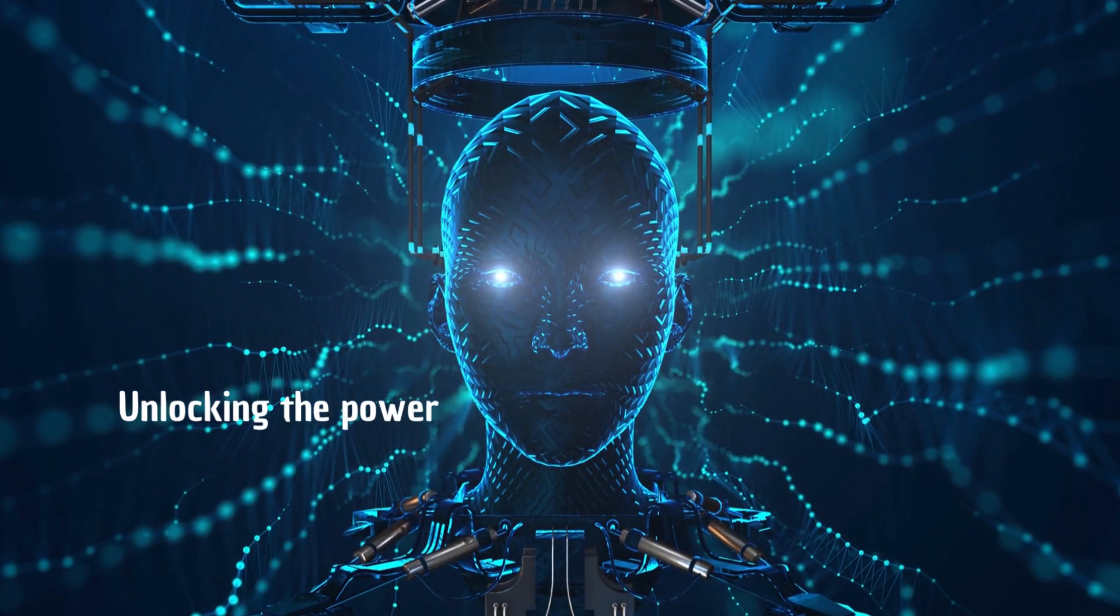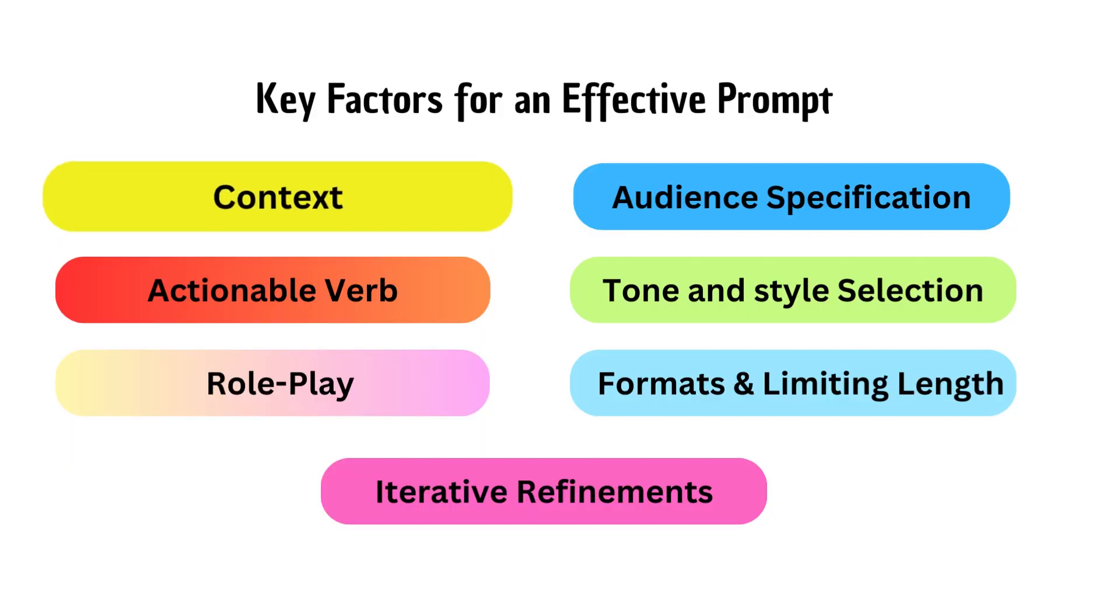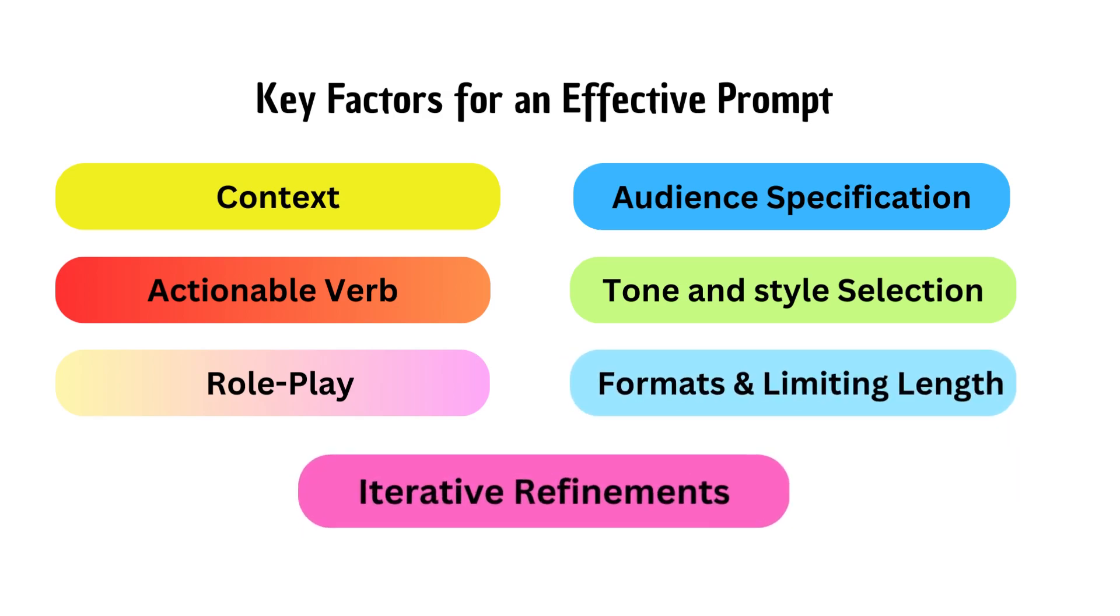Unlocking the power of AI begins with mastering the art of communication through prompt engineering. Providing context, using actionable verbs, embodying roles, specifying audience, selecting tone and style, limiting length, and iterative refinements are more than strategies. They're bridges to optimized, meaningful, and precise AI interactions.